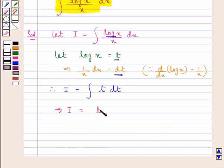we get I is equal to t square upon 2 plus C, where C is the constant of integration.